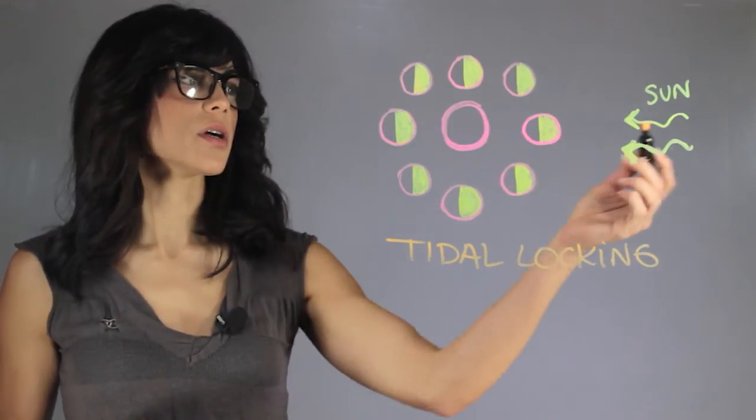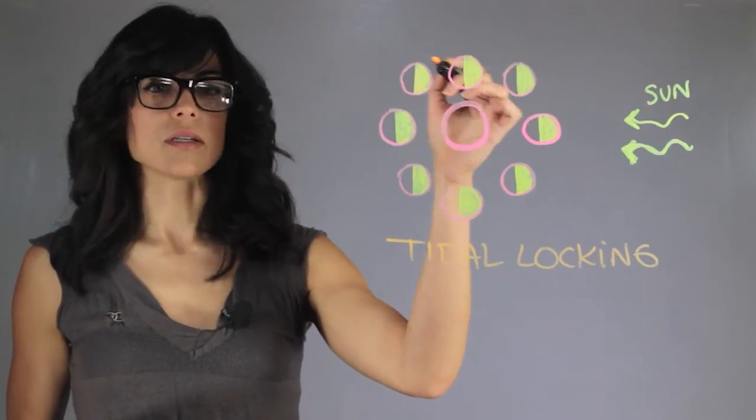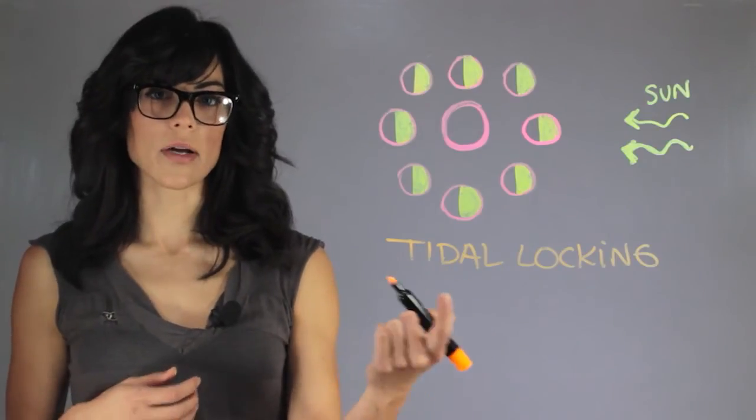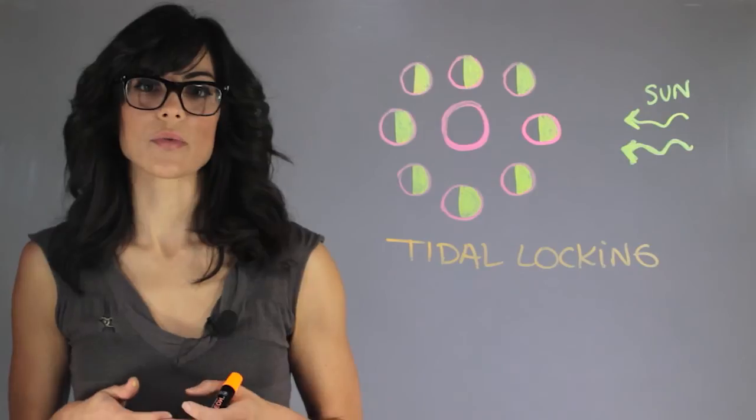So if you have the Moon here, half of it is being lit by the Sun. We're always seeing the same face of the Moon and that's what's called tidal locking and that's the physical phenomenon that causes the synchronous rotation.